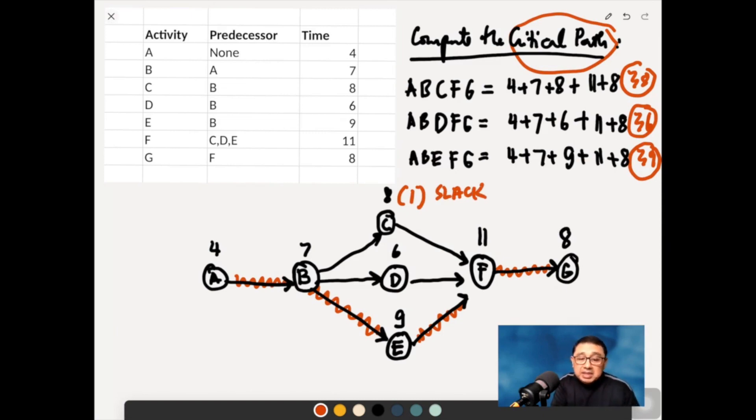And then A, B, D, F, G. There's 36 here. So for this one, there's an allowance or a slack of 3. Meaning, the project manager here can actually allow for some slippages in activities C and D.